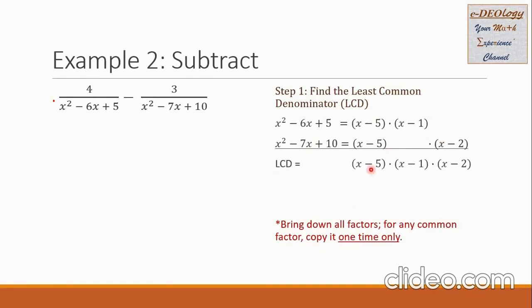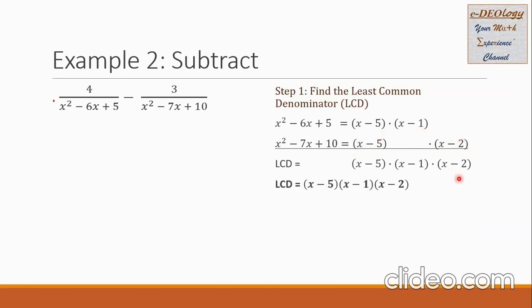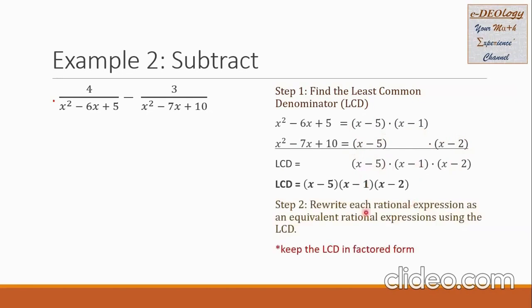We rearrange our factors so common factors are in the same column, then bring down all factors. For any common factor, copy it one time only. For the LCD, x minus 5 is common to both denominators, so we copy it once. Then x minus 1 and x minus 2 are each copied once. The LCD is x minus 5 times x minus 1 times x minus 2. We go to Step 2 to rewrite each expression using the LCD, keeping the LCD in factored form.